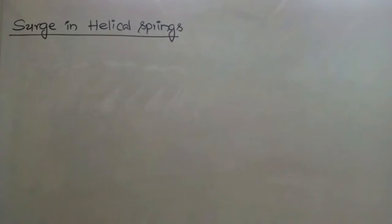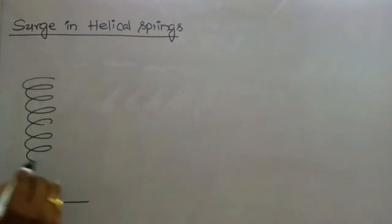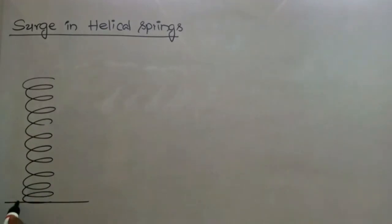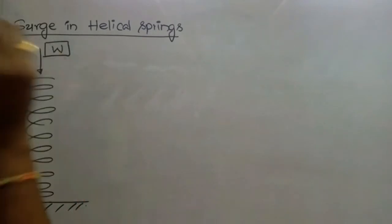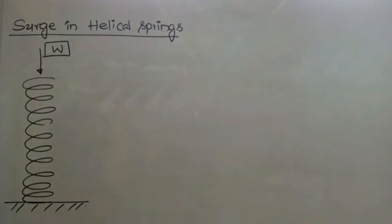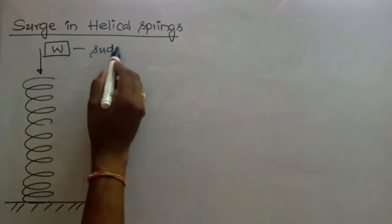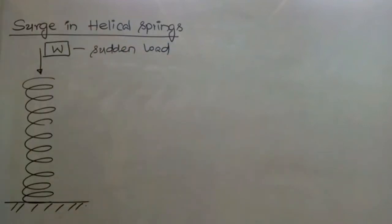So what do we mean by surging in springs? Let us take a spring where one end is resting on a fixed support. The other end has a load W acting on it. This load is not a uniform load — it is a suddenly applied load. This is a sudden load, and the load is of a fluctuating type.